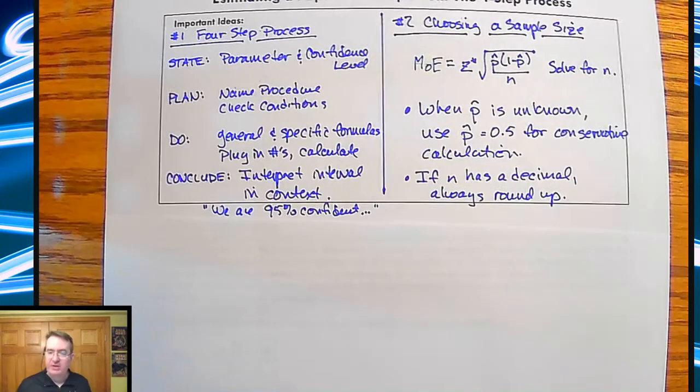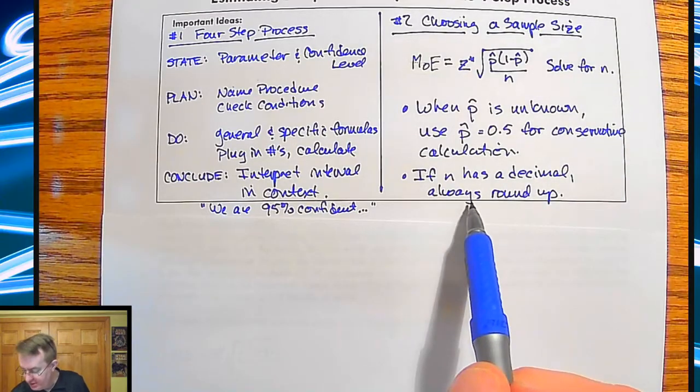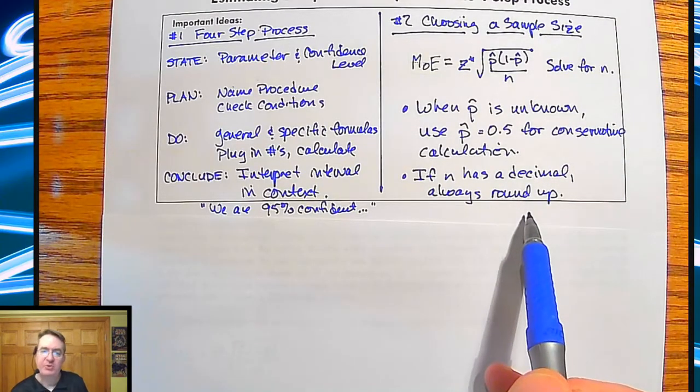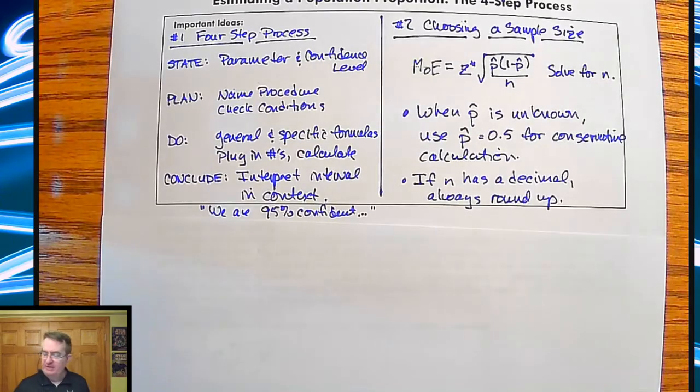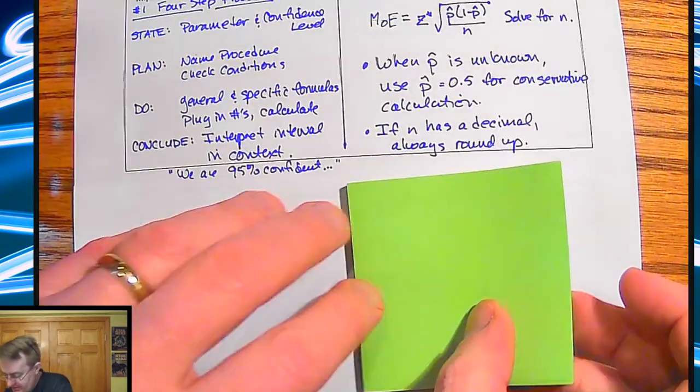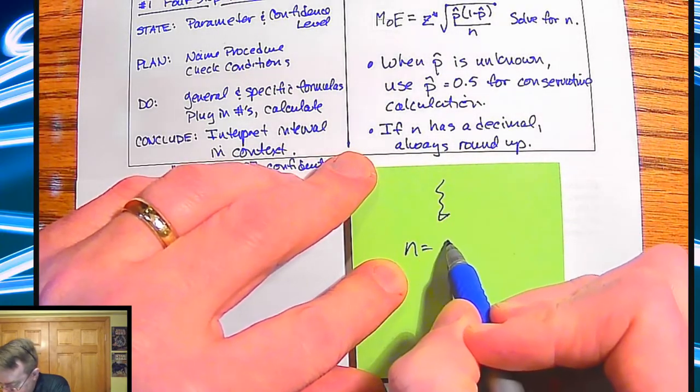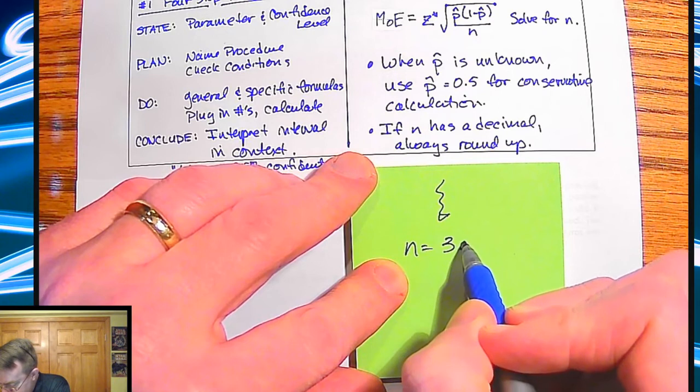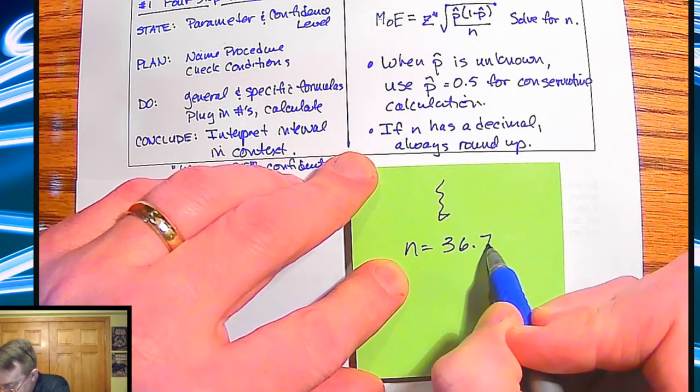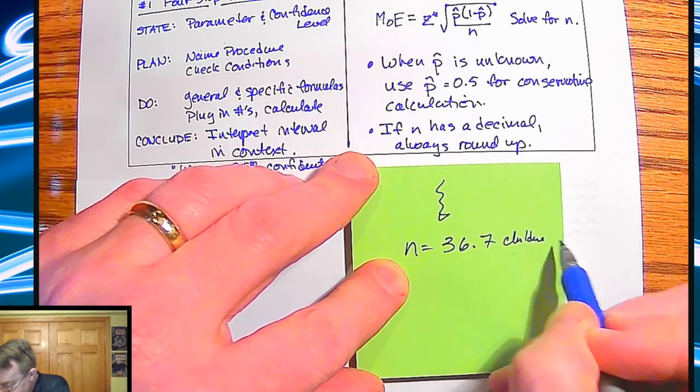The other thing to point out here is that when we're calculating out for N, you're going to end up, if you get a decimal, you're always going to round up. So let's say I'm coming through, and there's a couple of reasons for this. And I got N equals 36.7 children.